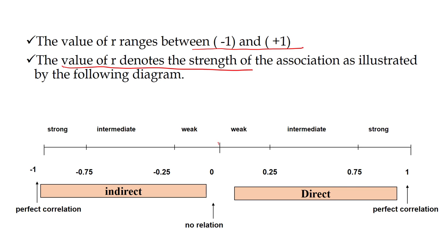Starting from here, this point is zero, indicated here. From here to here it is direct correlation, or you can say positive correlation, because it is above zero and below plus 1. This full length is called positive correlation.